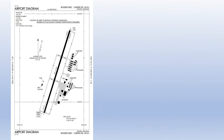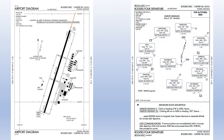We'll plan to depart runway 20 at Rogers. There are no obstacle DPs, but there is a standard instrument departure called the Rogers 4 departure that we'll utilize. It's a simple vector departure that has you turn to a heading of 183 after takeoff from runway 20, which puts us on a heading towards Razorback VOR. It has a top altitude of 3,000 feet. We'll assume the weather at Rogers is good enough to get back in on the ILS to runway 20.